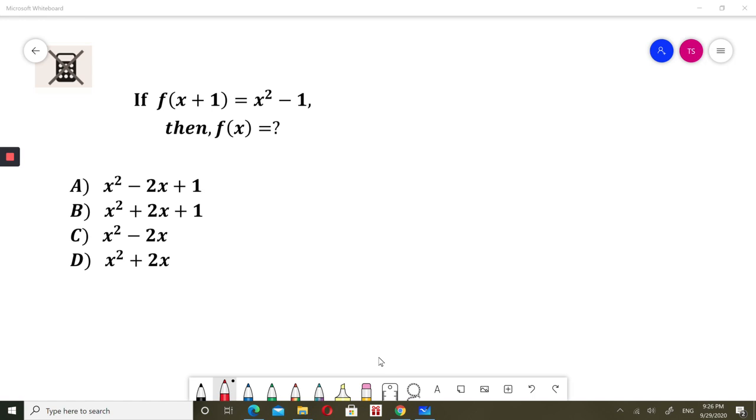So I need to calculate f of x. I'll write it here: f of x equals. The only thing I know is f of x plus 1, so I need to use it. What is important? If f of x plus 1 has that plus 1, I want to use this formula and I have that plus 1. So I'll write that plus 1 here.